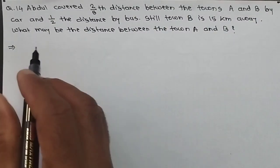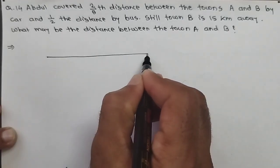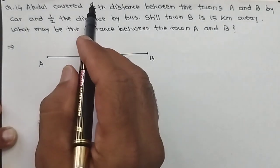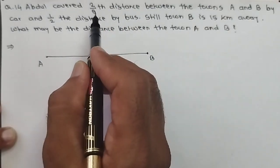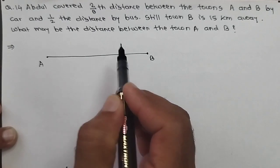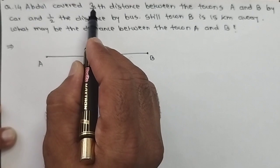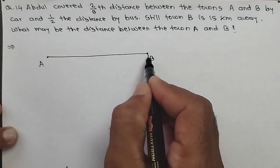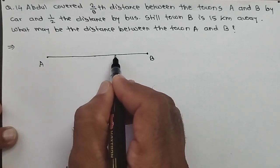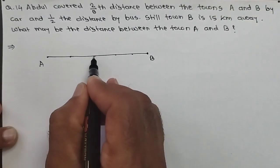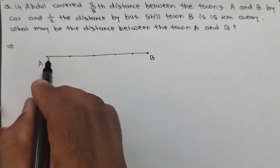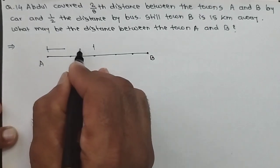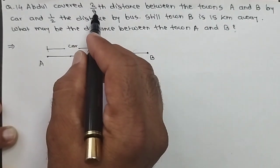For our visual understanding, let this line represent the total distance between town A and town B. Two-fifth distance is covered by car. Two-fifth means if the total distance is divided into five equal parts, then out of these five parts, two parts are covered by car. So let's divide the total distance into five equal parts — one, two, three, four, and five. Out of these five parts, two parts are covered by car. That is the meaning of two-fifth distance.